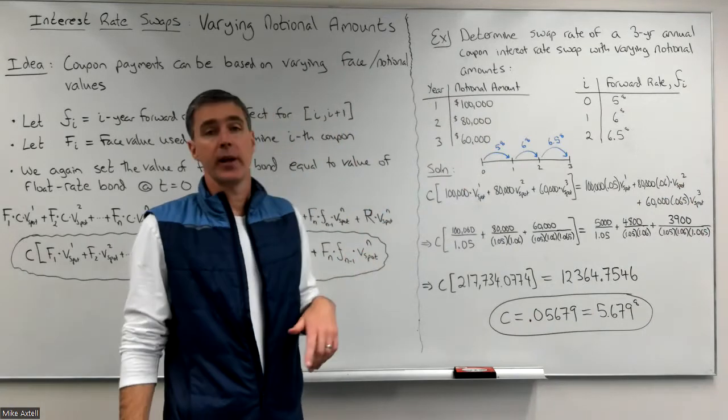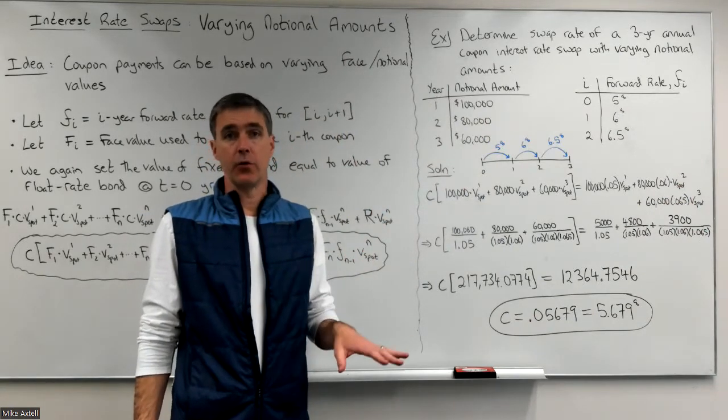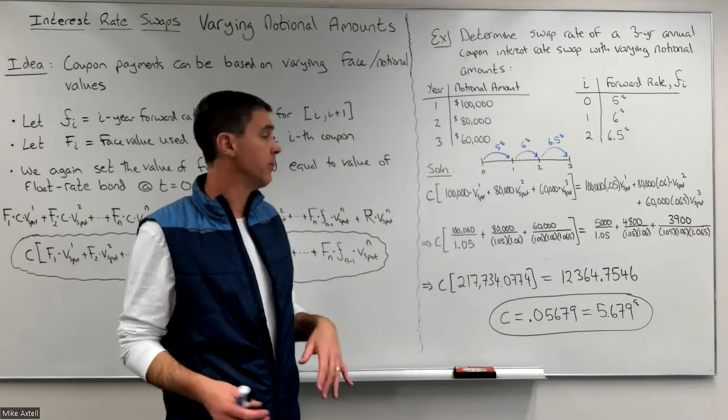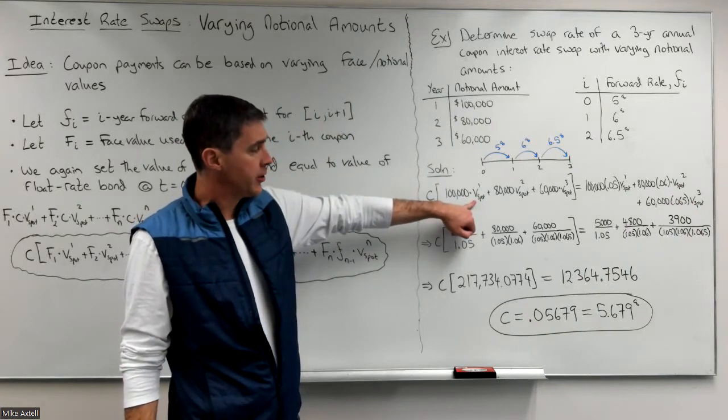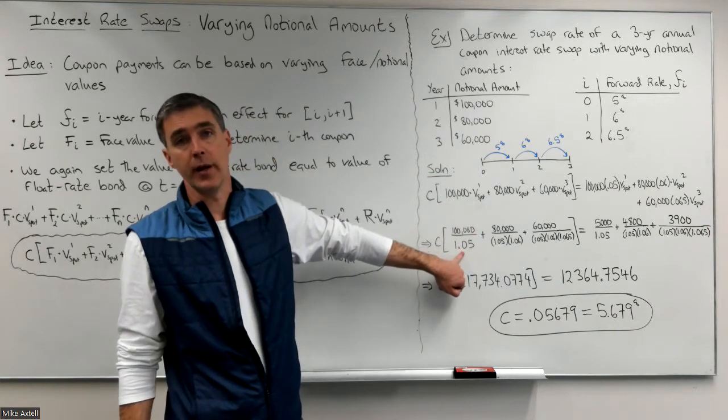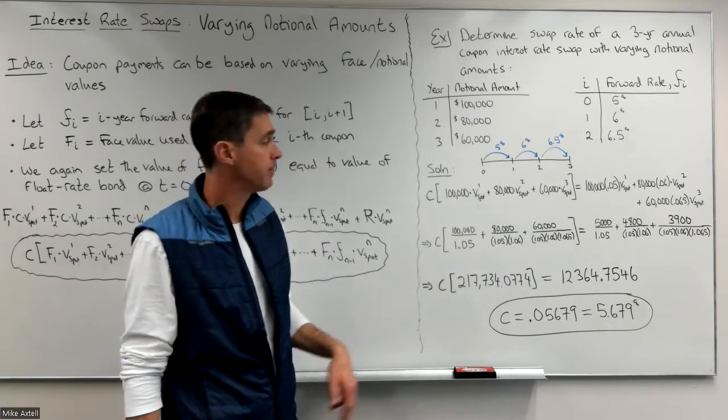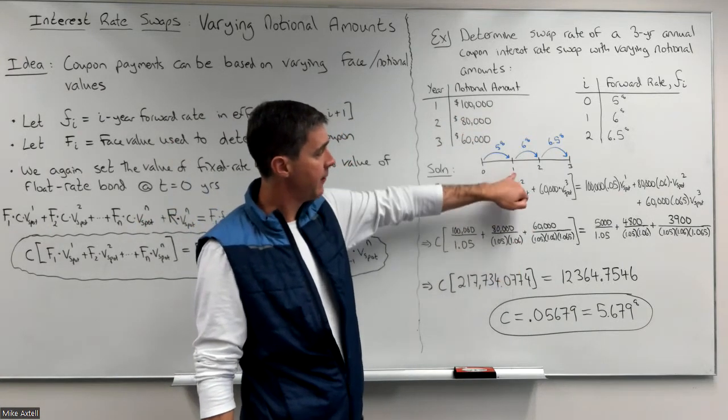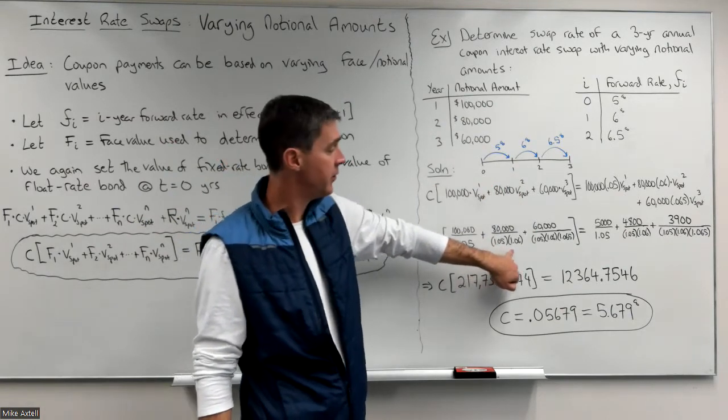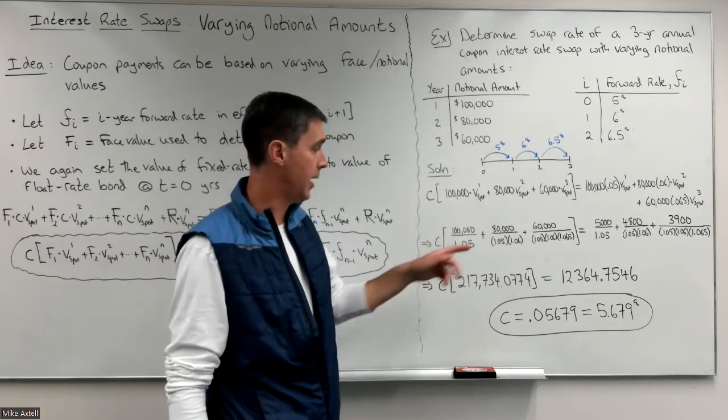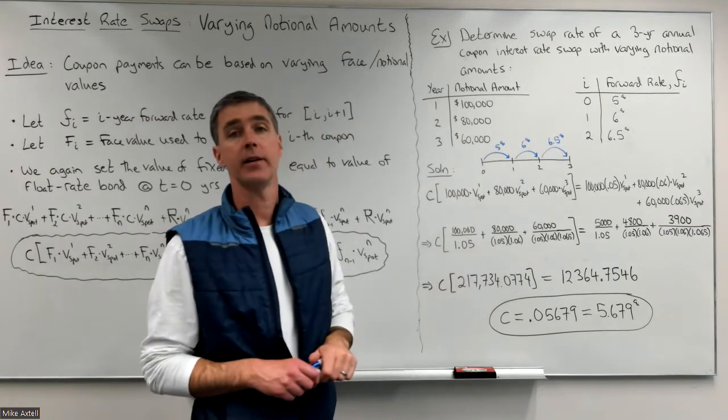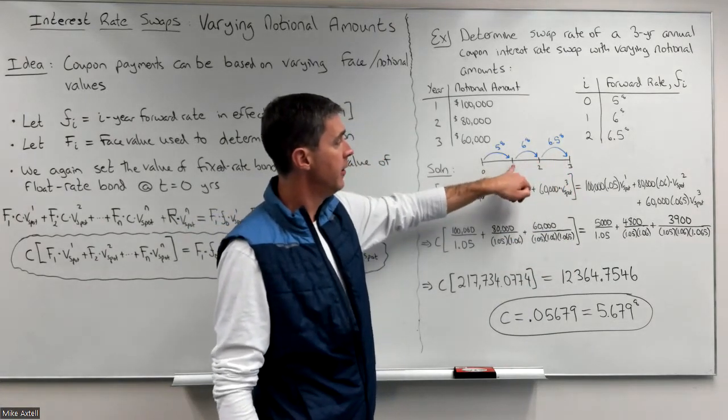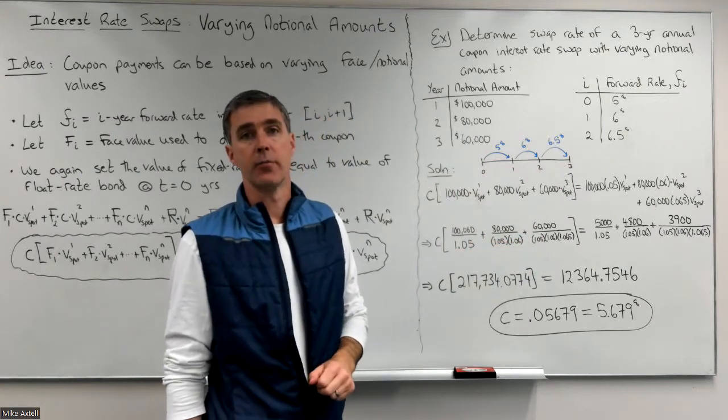Here's where we illustrate how you don't need spot rates at all if you just have forward rates. Using the forward rates, we could construct spot rates and do V spot that way, but we don't need to. The one-year spot rate is the same as the one-year forward rate, five percent. To drag money back two years, drag it back from two to one by dividing by 1.06, and from one to zero by dividing by 1.05. There's V spot squared in the denominator, 1.05 times 1.06. V spot cubed drags it back from three to two, from two to one, from one to zero, using the forward rates provided.